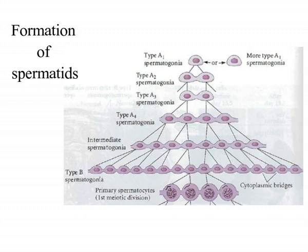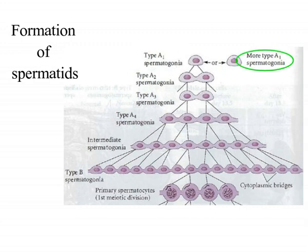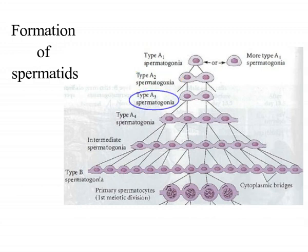Near the basal lamina of seminiferous tubules are stem cells called type A1 or dense type A spermatogonia. These spermatogonia divide mitotically to produce two cell types: type A1 spermatogonia that remain near the basal lamina and act as stem cells, and type A2 or pale type A spermatogonia that move towards the lumen of seminiferous tubules. Type A2 spermatogonia divide to form type A3, while A4 is formed from A3 spermatogonial cells.